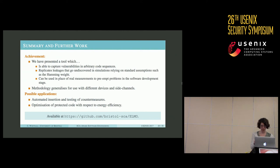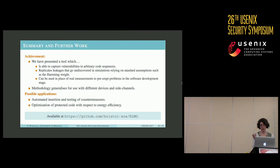In short, our tool is able to capture vulnerabilities in arbitrary code sequences. It replicates leakages that go undiscovered in simulations relying on standard assumptions such as Hamming weight, and it can be used in place of real measurements from a concrete device to locate problem instructions in the software development stage. The procedure is appropriate for use with different devices and side channels, and is a natural first step towards applications such as the automated insertion and testing of countermeasures, the optimization of protected code with respect to energy efficiency. The tool is available for download from GitHub.